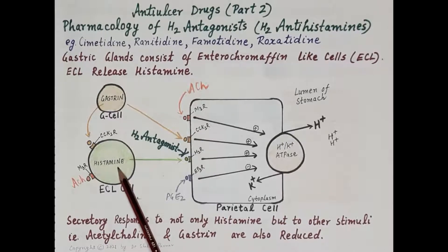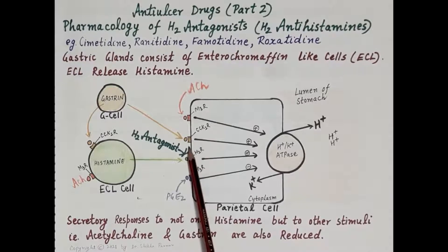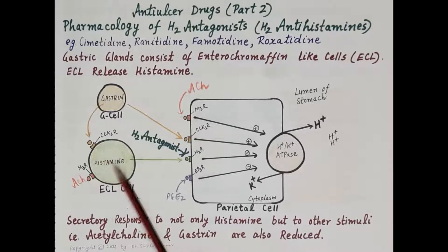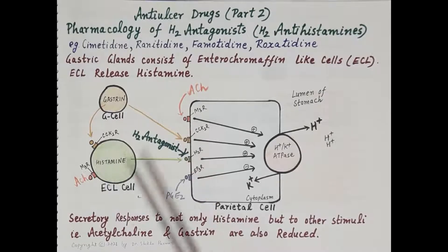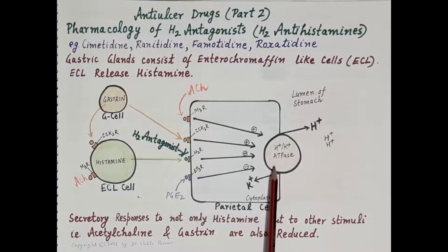Gastrin binds to CCK2 (cholecystokinin) receptors on parietal cells to stimulate gastric acid production, and also binds to CCK2 receptors on enterochromaffin-like cells to stimulate histamine release. Acetylcholine stimulates parietal cells directly via muscarinic M3 receptors and also stimulates enterochromaffin-like cells to release histamine. This released histamine binds to H2 receptors on parietal cells, stimulating the hydrogen-potassium ATPase (proton pump) and causing release of gastric acid.